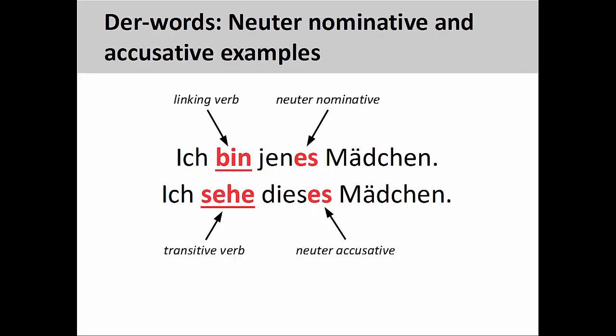The same advice holds for neuter der-word endings. In the first sentence, the nominative personal pronoun ich, when used with the linking verb bin, suggests that Mädchen will be a predicate noun, which requires the der-word to take a nominative neuter ending. In the second sentence, however, Mädchen receives the action of the transitive verb, which requires the der-word to take an accusative neuter ending.